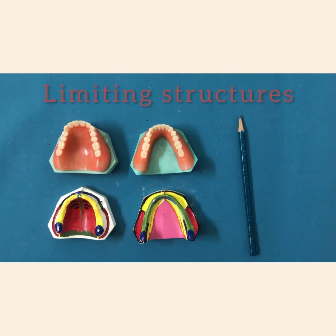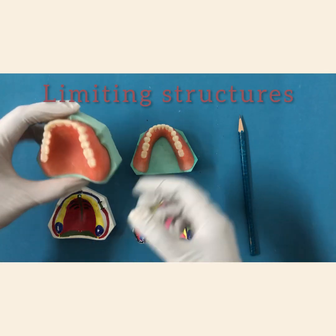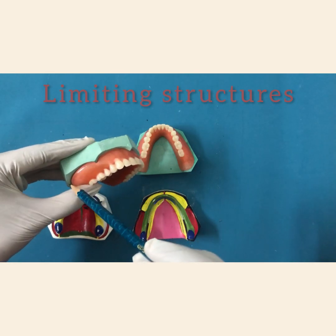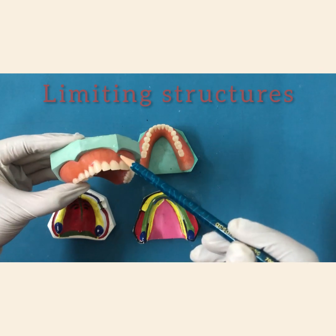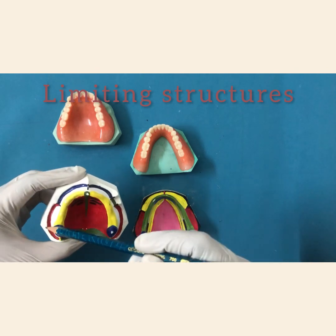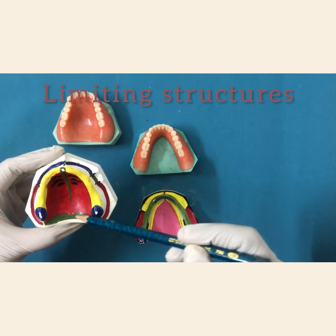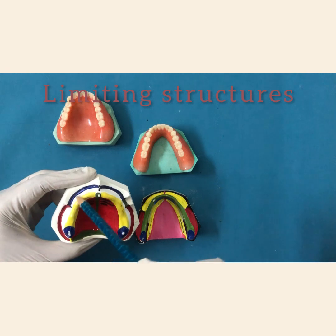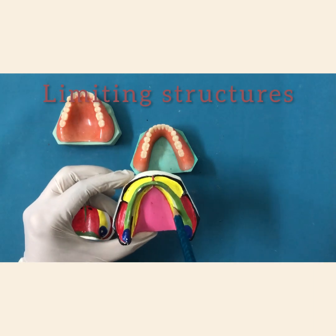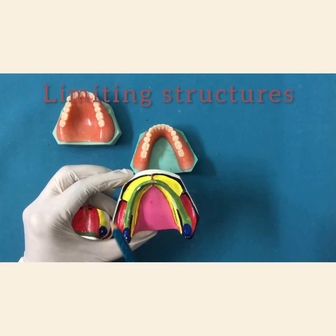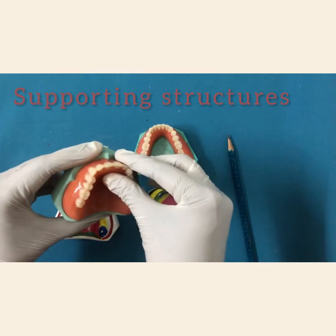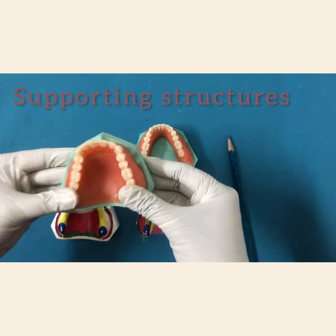Coming to the first — limiting structures — these are the structures at the periphery of your denture. See this is the border of your denture, and all those structures at the border area are called limiting structures. We have marked the areas here; we'll be covering them in detail in the next class. In the lower cast, all these areas come under the category of limiting structures.